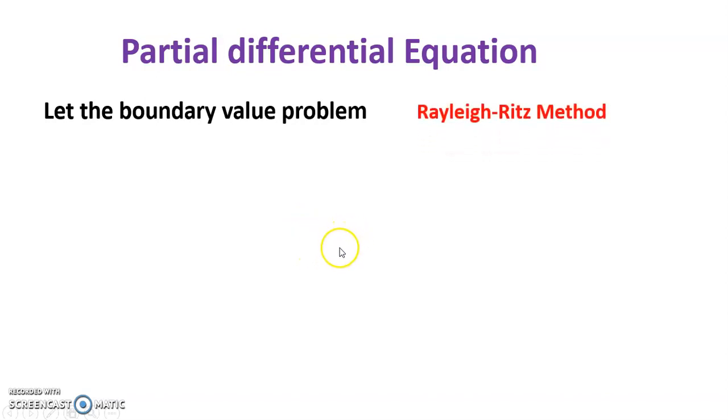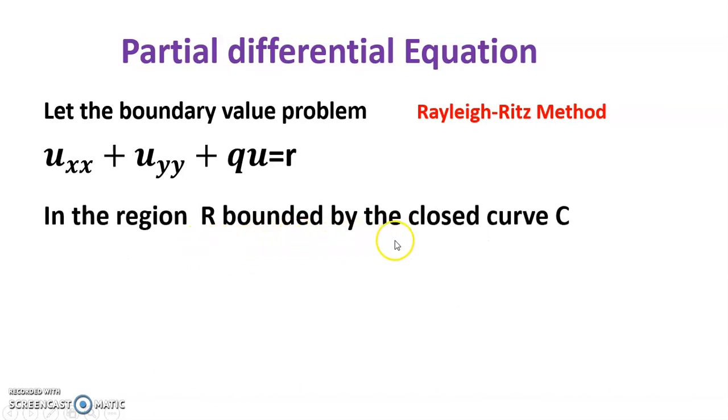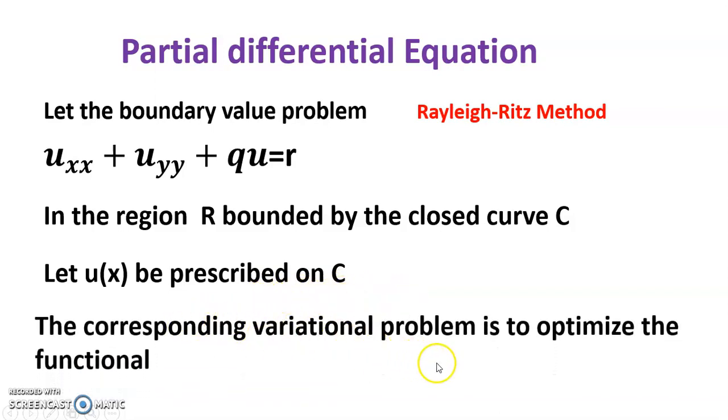Rayleigh-Ritz method: uxx + uyy + qu = r. The region R is bounded by the closed curve c. Let ux be prescribed on c, and the corresponding variational problem is to optimize the functional.